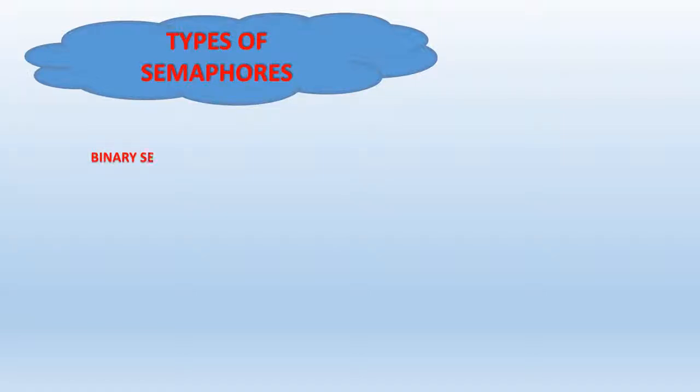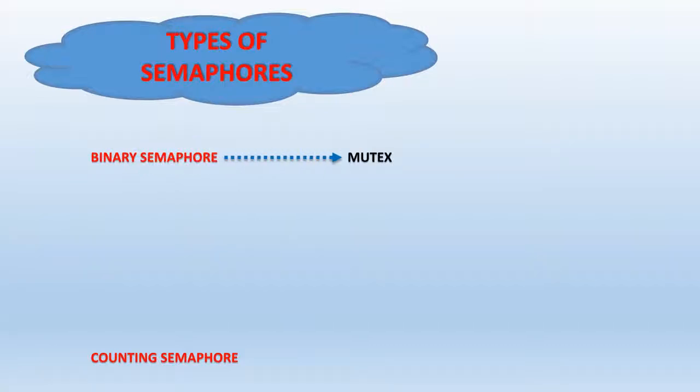Before creating threads and understanding how two threads can be synchronized in an embedded system using any real-time operating system, let us first understand the types of semaphores. There are basically two types: a binary semaphore and a counting semaphore. A binary semaphore can be further classified into a mutex and non-mutex.